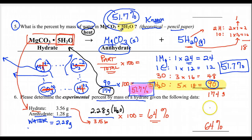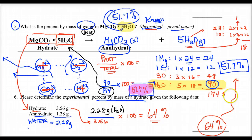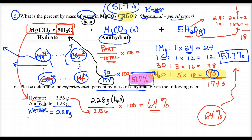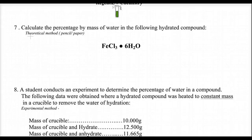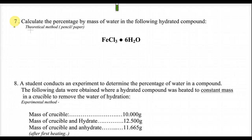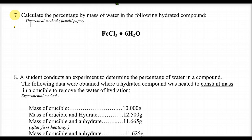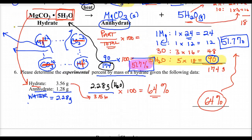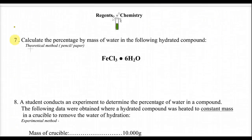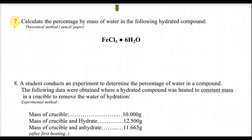That's what you're going to do in lab today. Compare your experimental percentage with your known — the theoretical value you calculate with pencil and paper, just like we did in number five. Number seven is where you find the theoretical percent by mass of water in your hydrate, and number eight is the experiment.